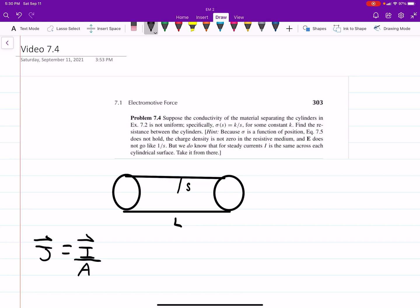Okay, so this is problem 7.4 out of Griffiths, and so a reference example 7.2, which you can look at if you want, but I kind of already drew it where we have the cylinder. It's a little messed up of a drawing, but I think you get the idea.